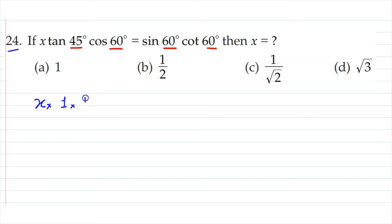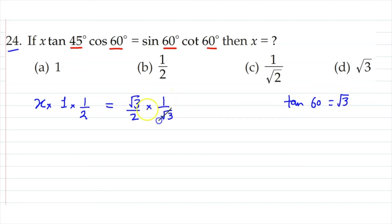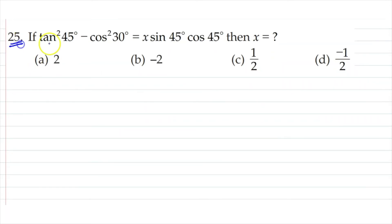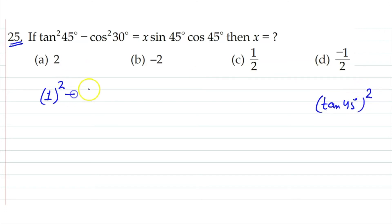Substituting: tan 45° is 1, cos 60° is 1/2, sin 60° is √3/2, and cos 45° is 1/√2. So we have x times 1 times 1/2 equals (√3/2) times (1/√2). Remember that sin 45° and cos 45° are both 1/√2. Also, sin 30° is 1/2.